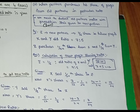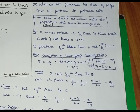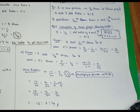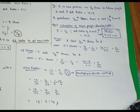Next, Y's old share is 5 by 12. Y gave 1 by 8th part to Z, so Y's new share is 5 by 12 minus 1 by 8. Finding the LCM: 10 minus 3 divided by 24 equals 7 by 24. So the new shares are X is 13 by 24 and Y is 7 by 24. Z's share is already known as 1 by 6, no need to recalculate.